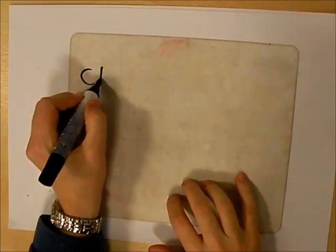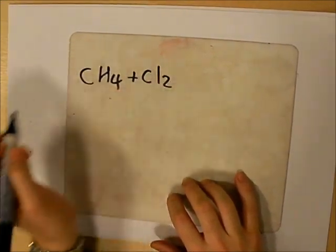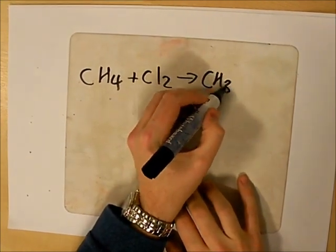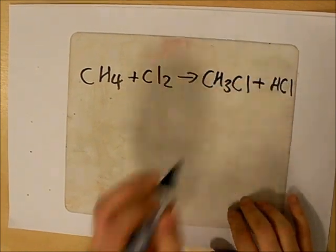The reaction we're going to look at today is a mechanism for the free radical substitution. It's the reaction between an alkane like methane reacting with a halogen like chlorine to give a halogenoalkane, this is chloromethane, and hydrogen chloride.